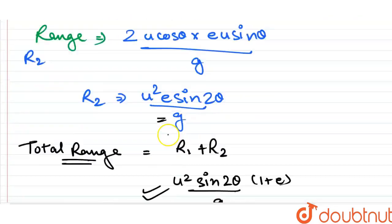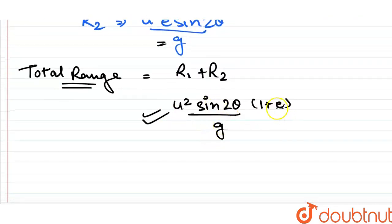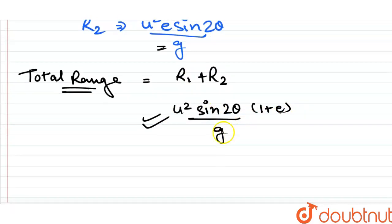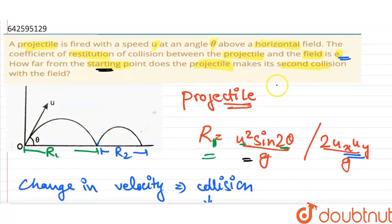From the starting point at a distance of u square sin 2 theta (1 plus e) upon g, the projectile will make its second collision. Thank you.